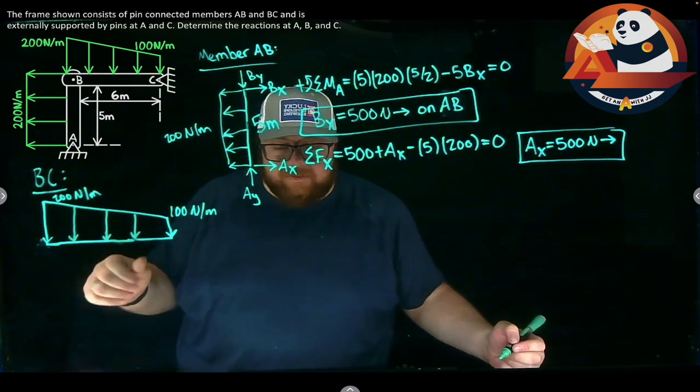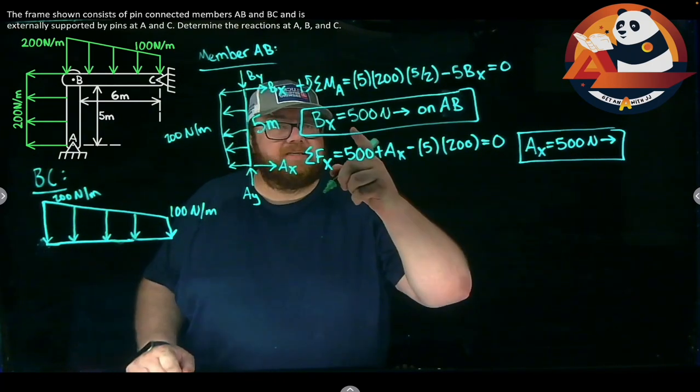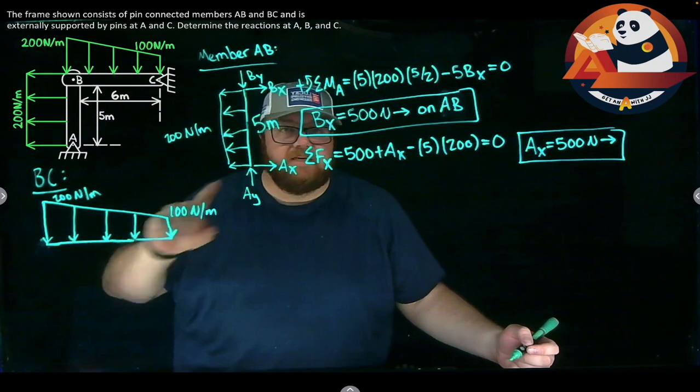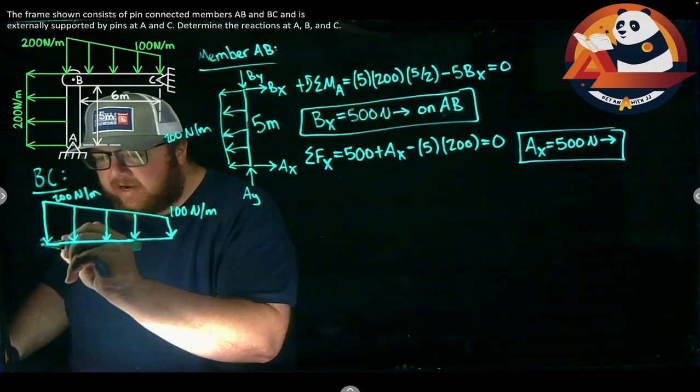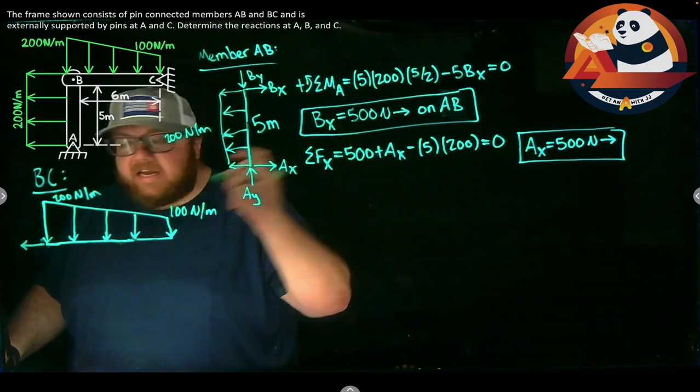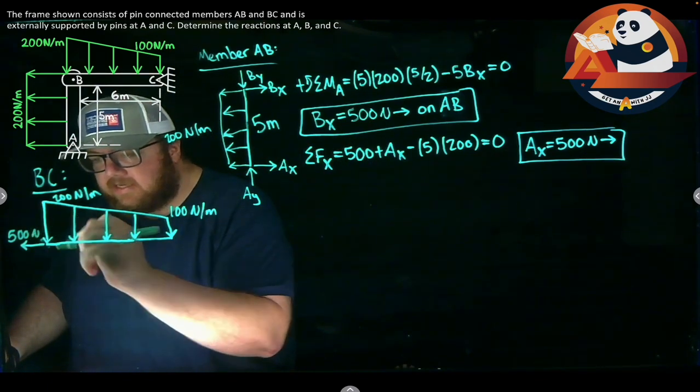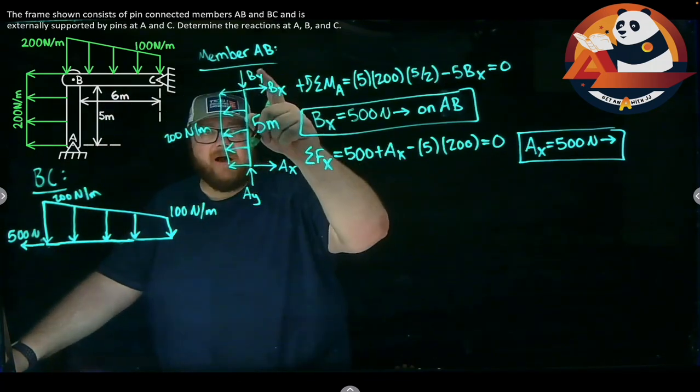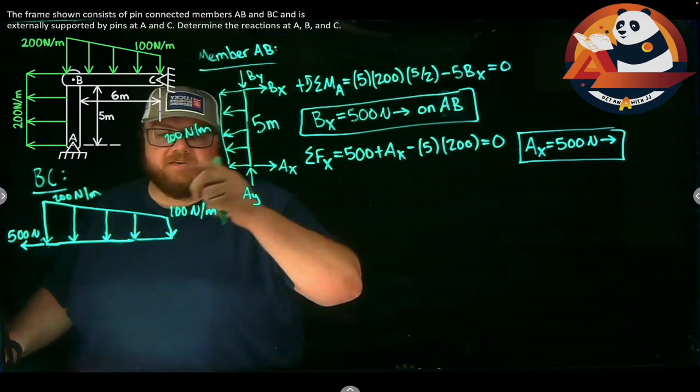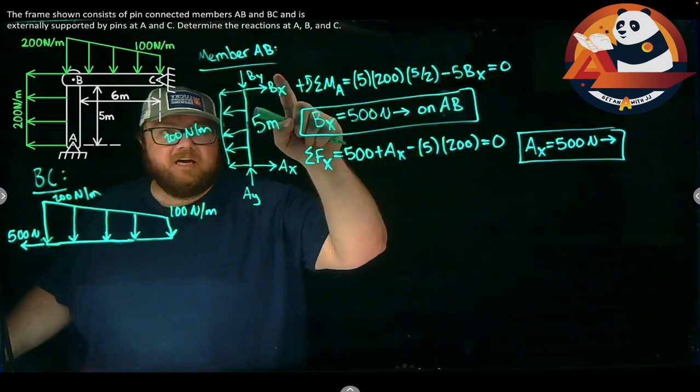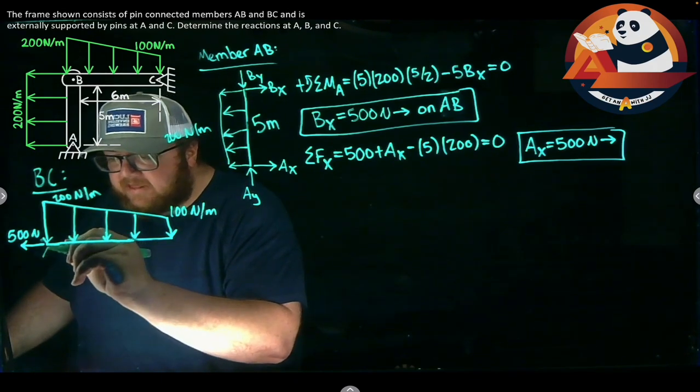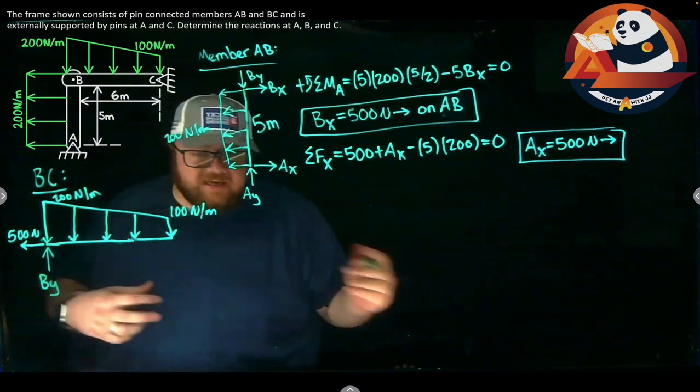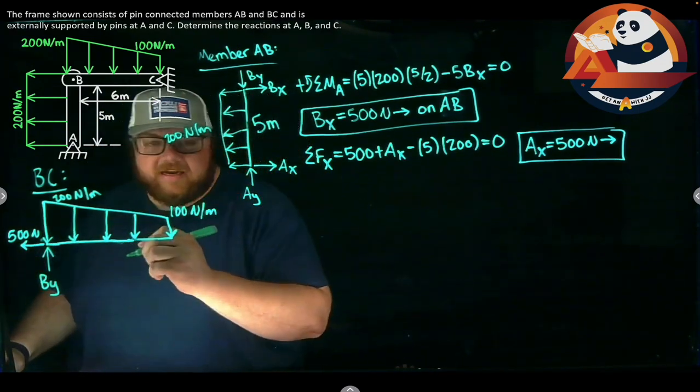At B, I have an internal pin. I can work with that. I already found BX. I got that it was to the right on member AB. To be equal and opposite, as I move from one member to the next, that has to change direction. So my BX is now going to the left, but with the same magnitude. Equal, still 500 newtons. Opposite, it's not to the right, we'll show to the left. I assume BY went down before. We want to make a cohesive assumption, consistent between one free body diagram and the next. So if I assume it went down on AB, I need to put this thing going up here on BC. I'm still BY though. That way it's equal and opposite as I'm moving from one member to the next.